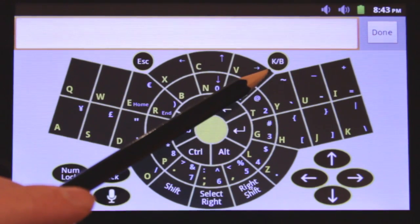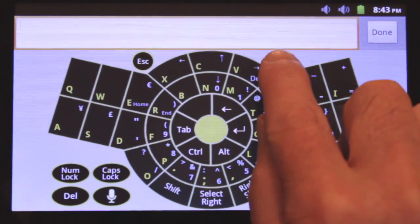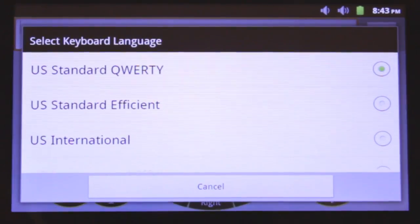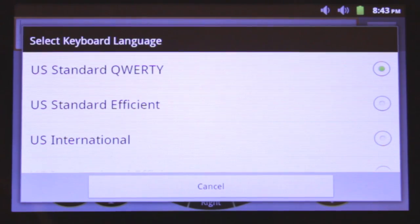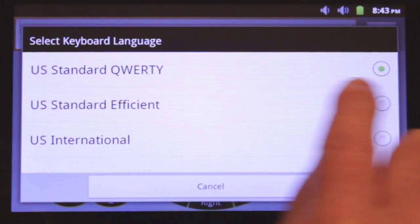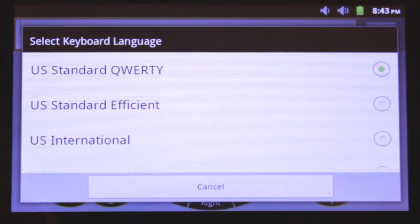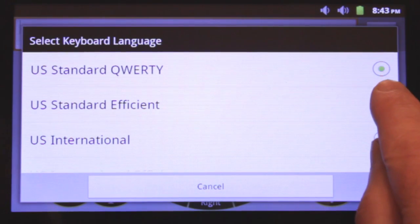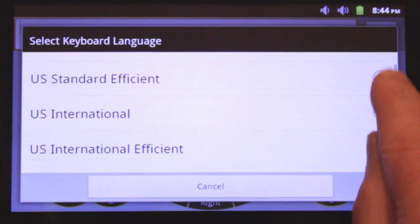On the top right of the keyboard layout is the keyboard key which allows access to the various language keyboard layouts. Note that the default language keyboard is the US standard QWERTY layout. There are a total of eight layouts available.